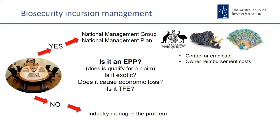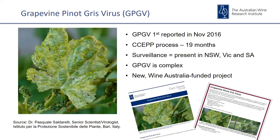In the case of pinot gris virus, the outcome was a 'no.' The first report came in November 2016, and the CCEPP meetings lasted about 19 months. During that time, surveillance was conducted in New South Wales and South Australia — both through growers sending in samples of suspected symptoms, and through targeted surveillance coordinated by Vine Health Australia. The outcome was confirmation that pinot gris virus was not isolated to one location; multiple detections were found and it is now present in several states.